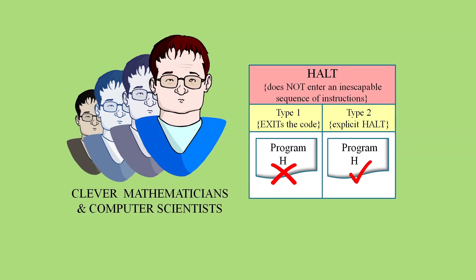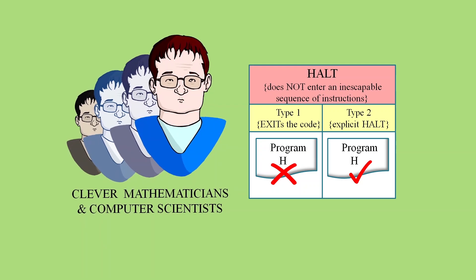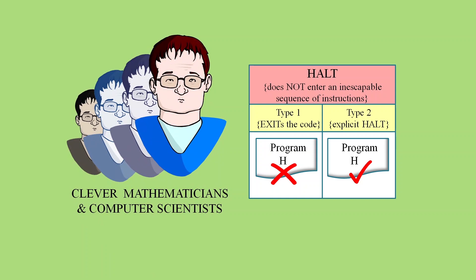But of course, Tara must be wrong. Because if she weren't, then it would mean that for the best part of a century, the world's cleverest mathematicians and computer scientists for that matter have failed to spot the simple issue that there can be two types of halt.